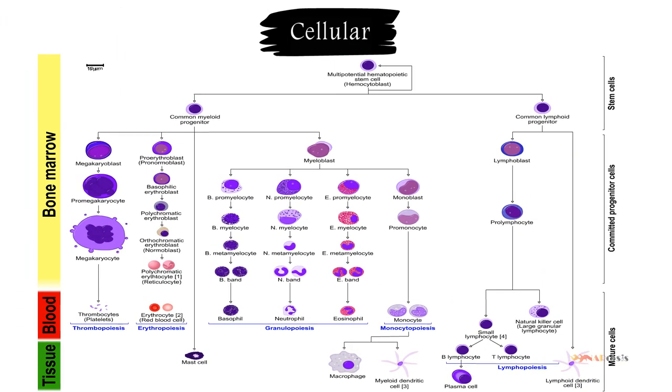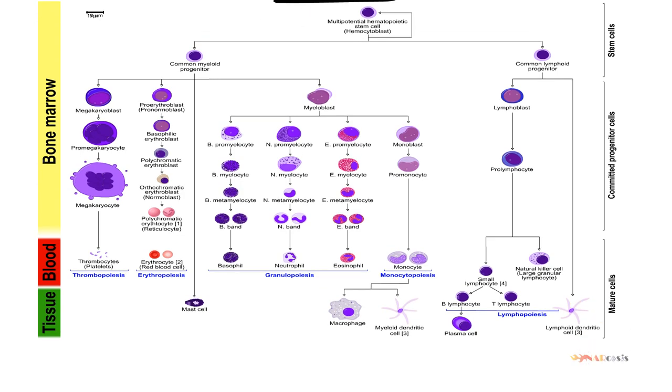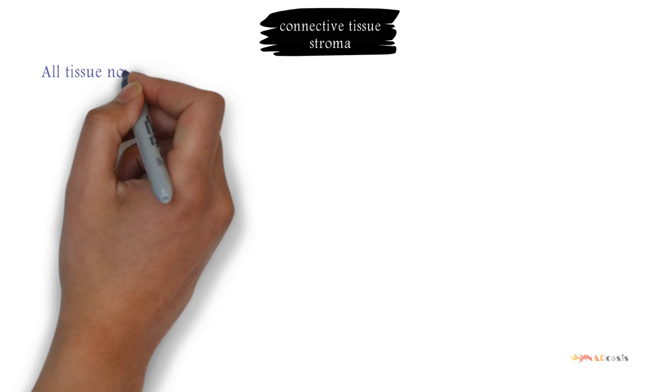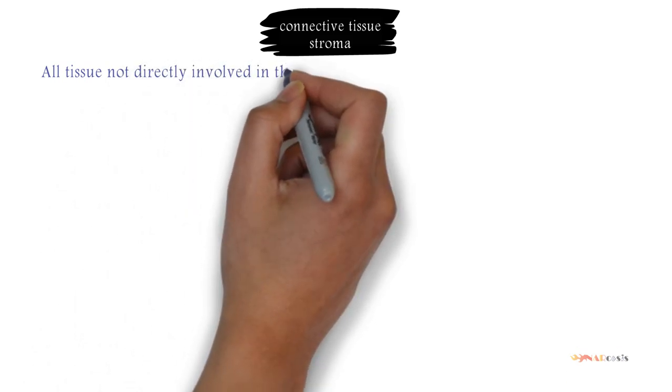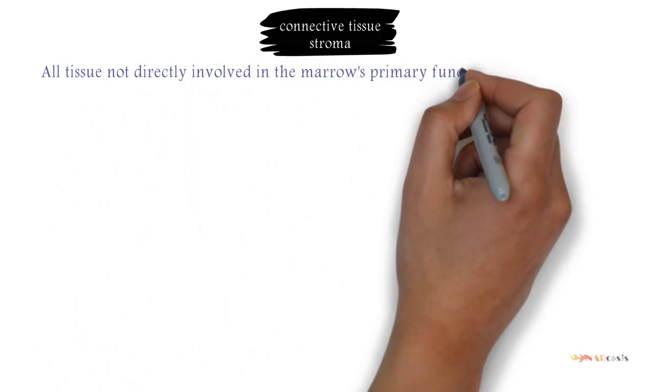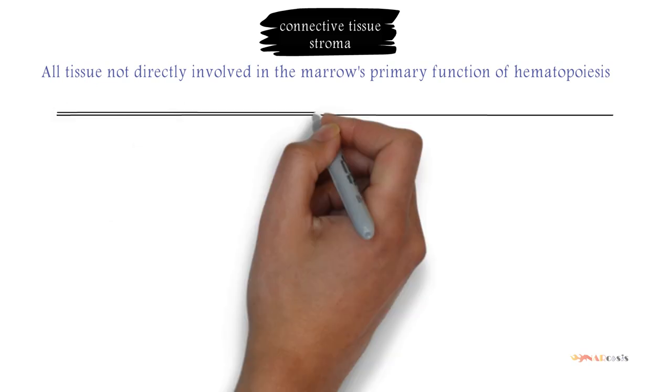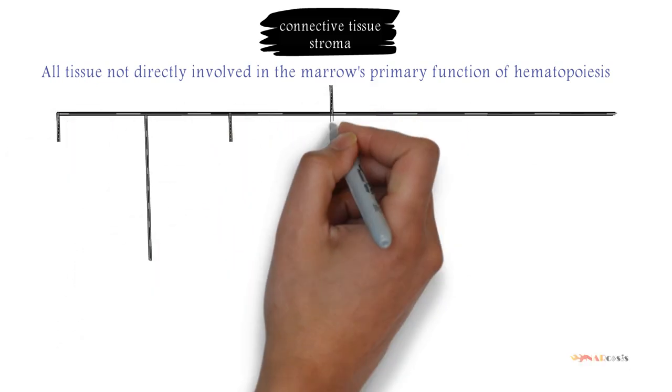Let's jump to the non-cellular part of the bone marrow or the stroma. It includes all tissue not directly involved in the marrow's primary function of hematopoiesis, but may be indirectly involved in hematopoiesis. They play as microenvironment that influences the function and differentiation of hematopoietic cells, so they provide the growth factors and work as an adhesive network to support the hematopoietic stem cells.